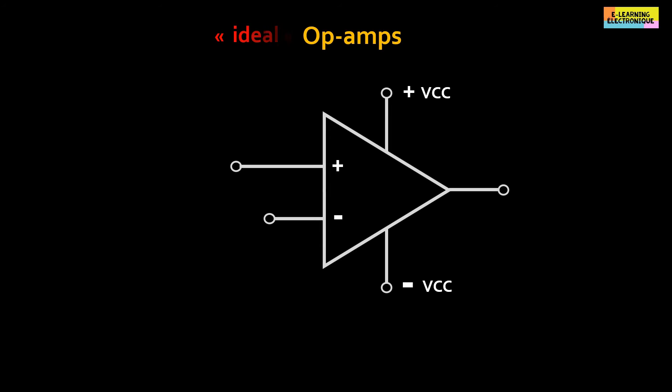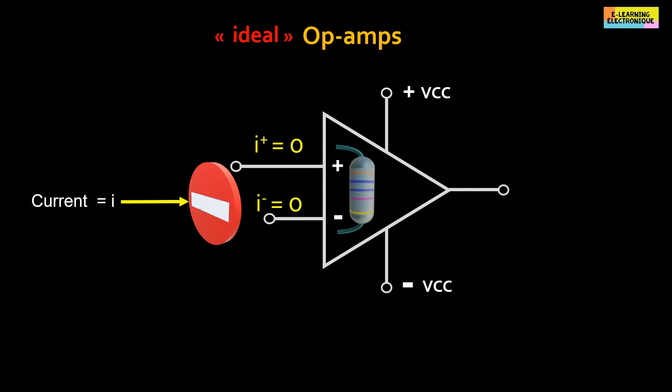In ideal op-amps, i.e. with zero defect, there is no current at its input because it has an infinite impedance or internal resistance. At the output, there can be a current whose value will depend on the load. This current comes from the op-amps own power supply. In reality, the op-amp used are not perfect, there is nevertheless a very low current flow at the input of a few micro or nano amperes.